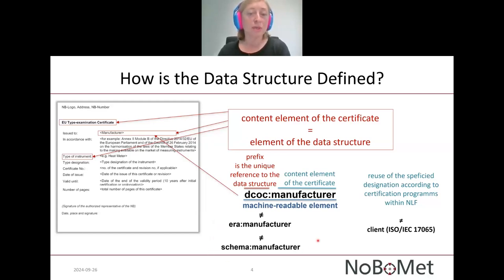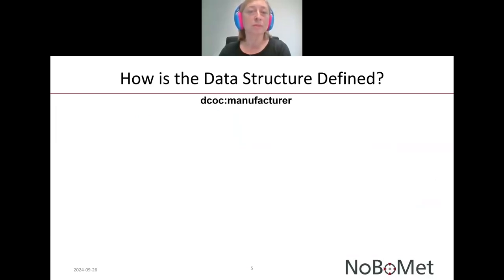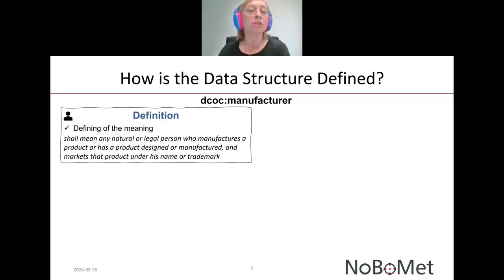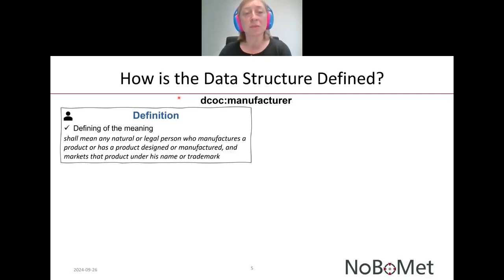In addition to machine-readable elements, other pieces of information have been defined within the DCOC data structure. The first is the definition, which is very important because it provides the meaning of machine-readable elements. Definitions are especially important for re-users of the DCOC data structure, because they provide information on whether a given machine-readable element can be used within a new use case or not.